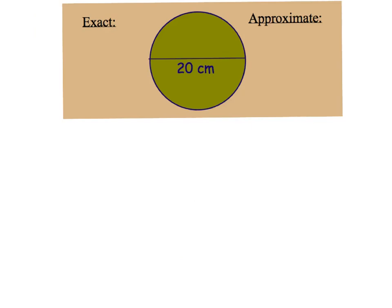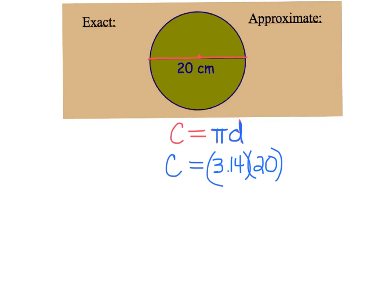Let's try an example. I have a circle and I know the diameter is 20, going all the way across. First, always write down the formula: circumference equals pi times diameter. Then fill in what you know. I don't know the circumference, so I write C. Pi equals 3.14, and the diameter is 20. Grab your calculator and type in 3.14 times 20 — I get 62.8. So my circumference is approximately 62.8 centimeters.